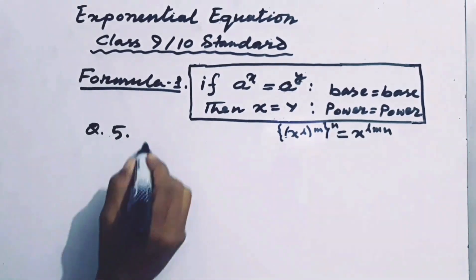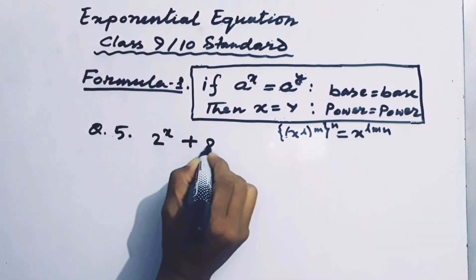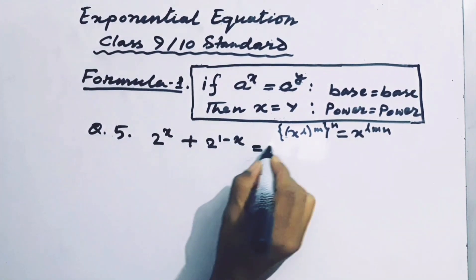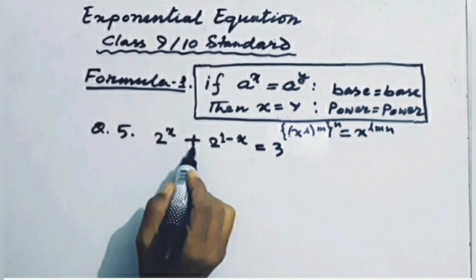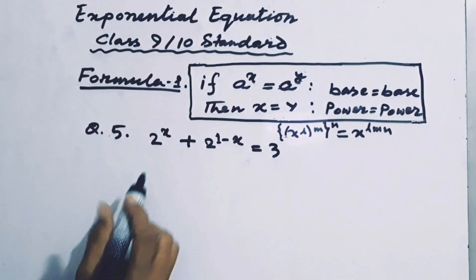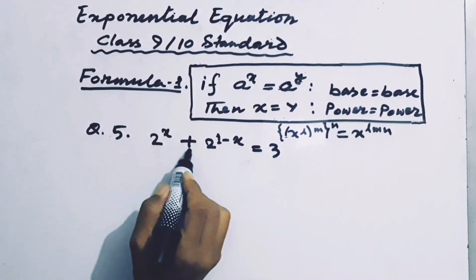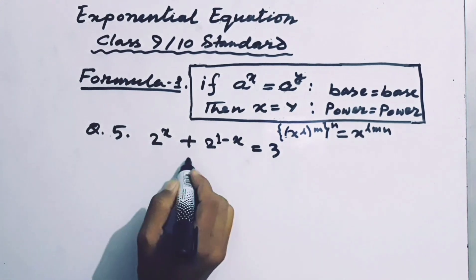Question number 5: 2 to the power x plus 2 to the power (1 minus x) equals 3. This is not like the previous sum, because there is a plus sign in the equation and so the terms are not in product form. To solve the equation, we should factorize the terms.